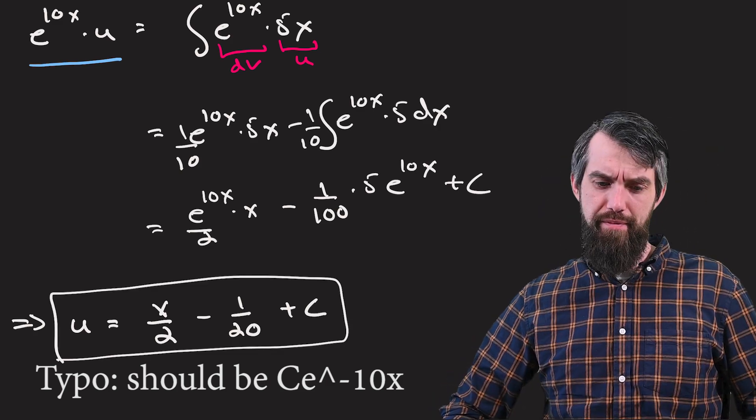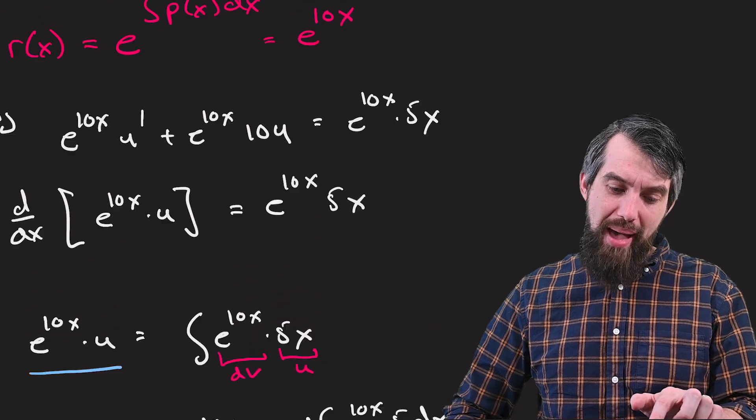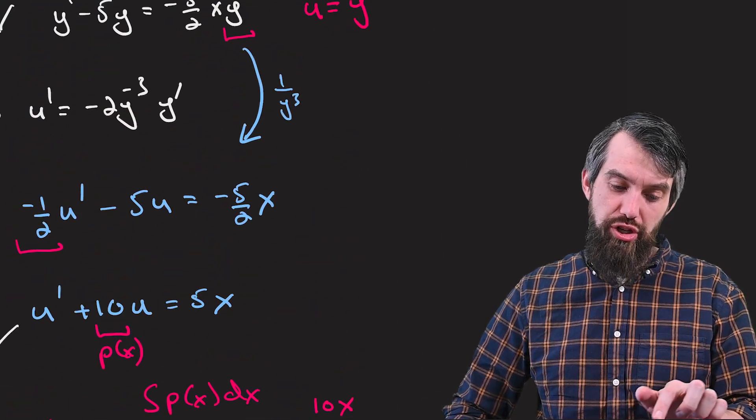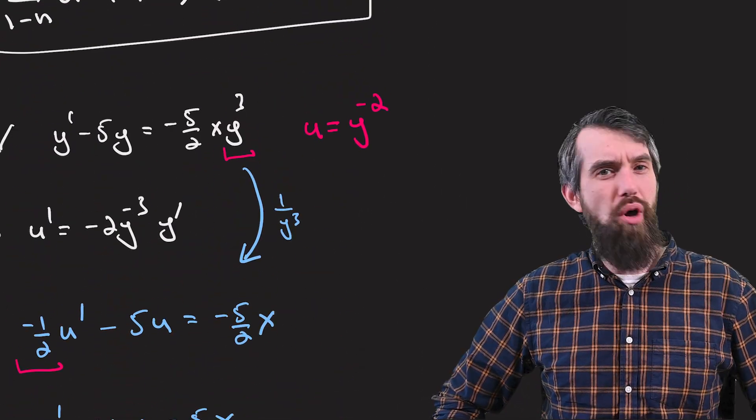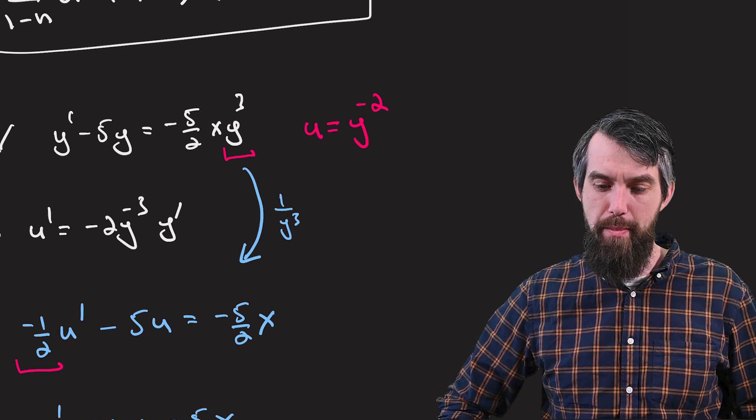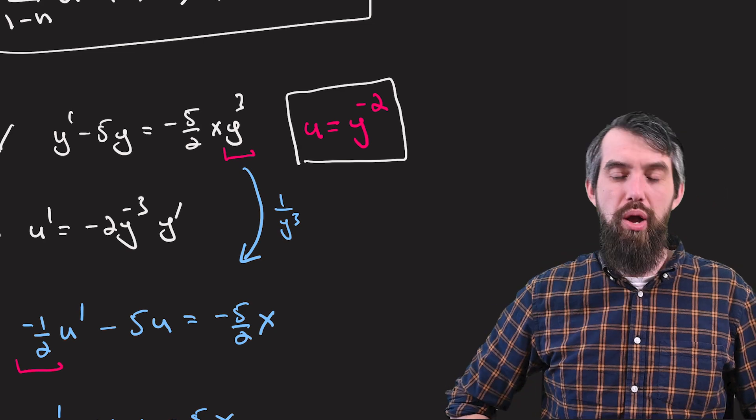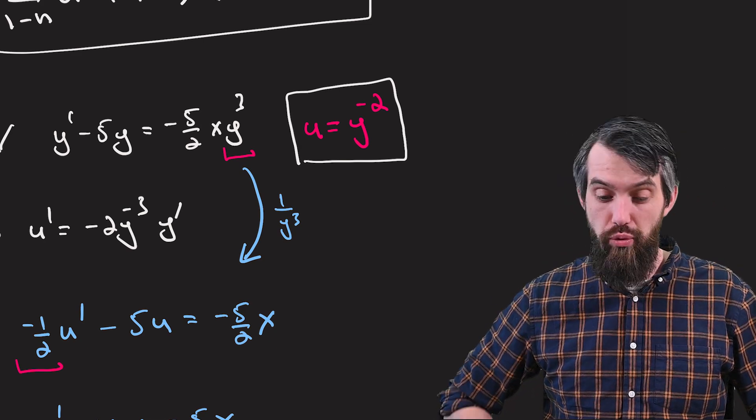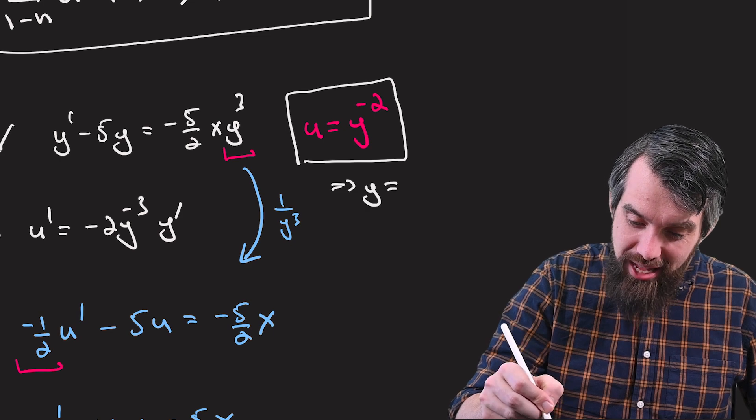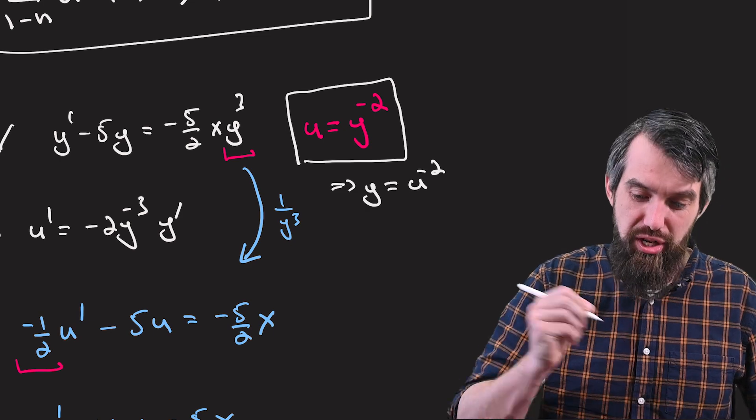Because if I go all the way back, I mean, my original equation was written entirely, not in terms of u, in terms of y. And then I had this equation that u was equal to y to the minus 2, which, if we preferred, we could rewrite as saying y is equal to u to the minus 2.